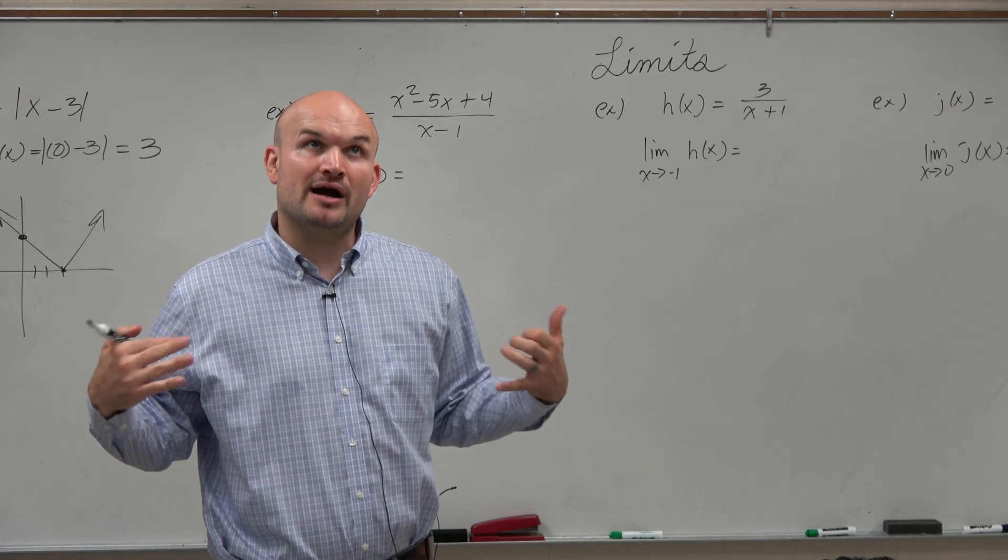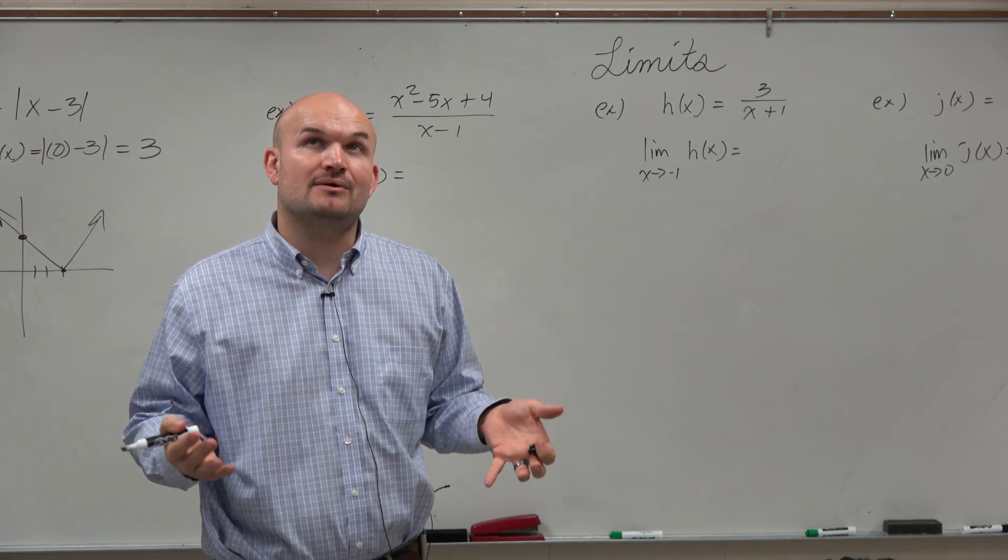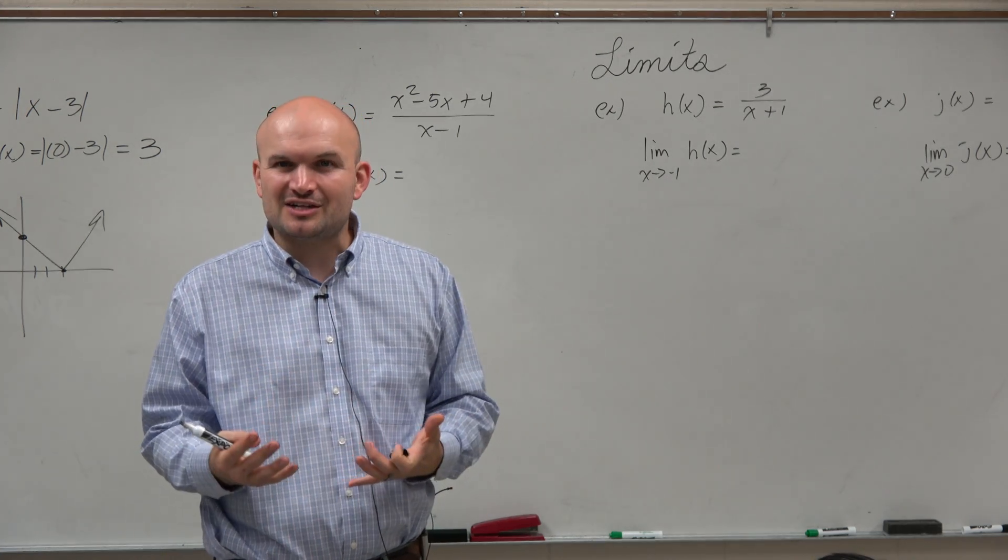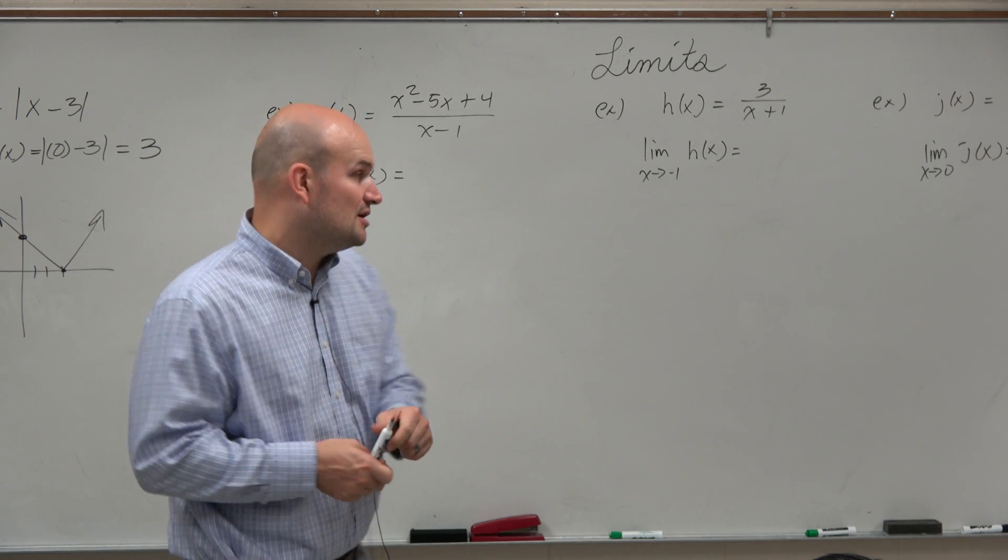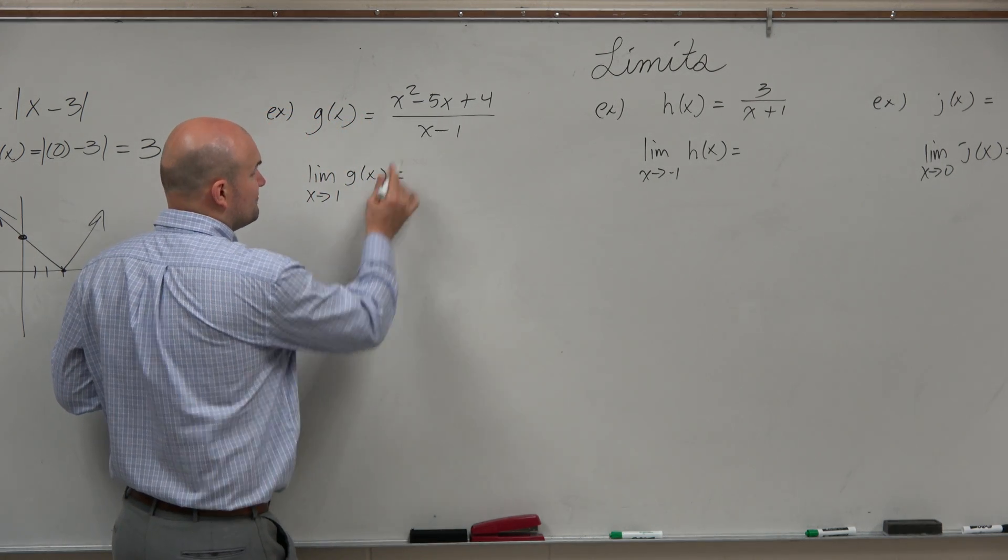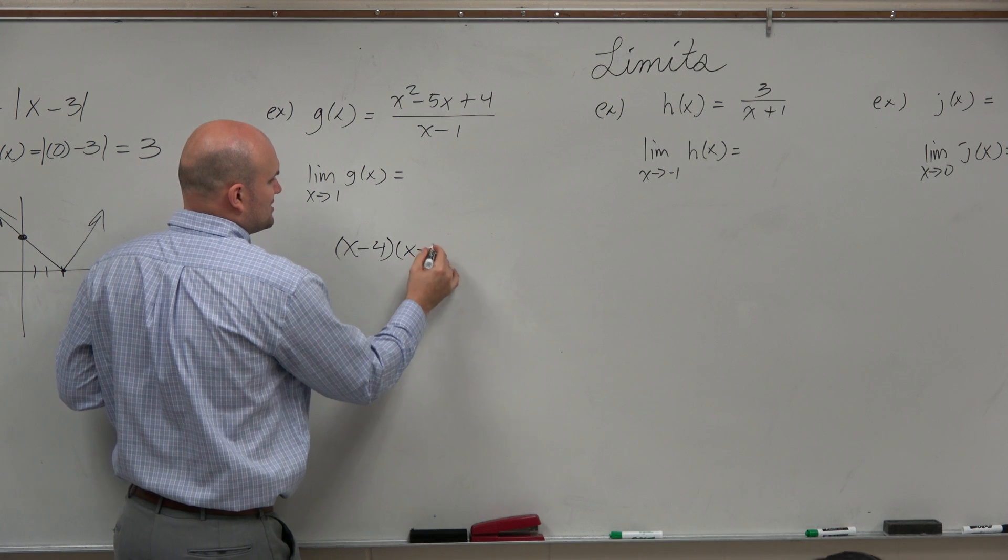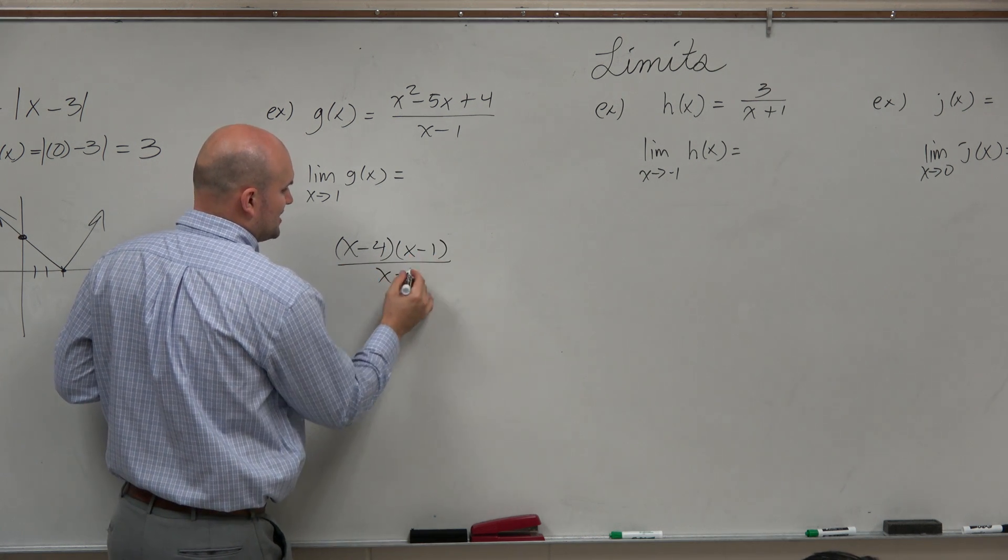So then we have to go back - rational expressions. We did talk about rational expressions in this class. One thing we always did is whenever we saw something that was factorable, we usually factored it, and that kind of helped us out. So let's do a little work down below and factor our numerator. I'm sorry - (x-4)(x-1) all over (x-1).